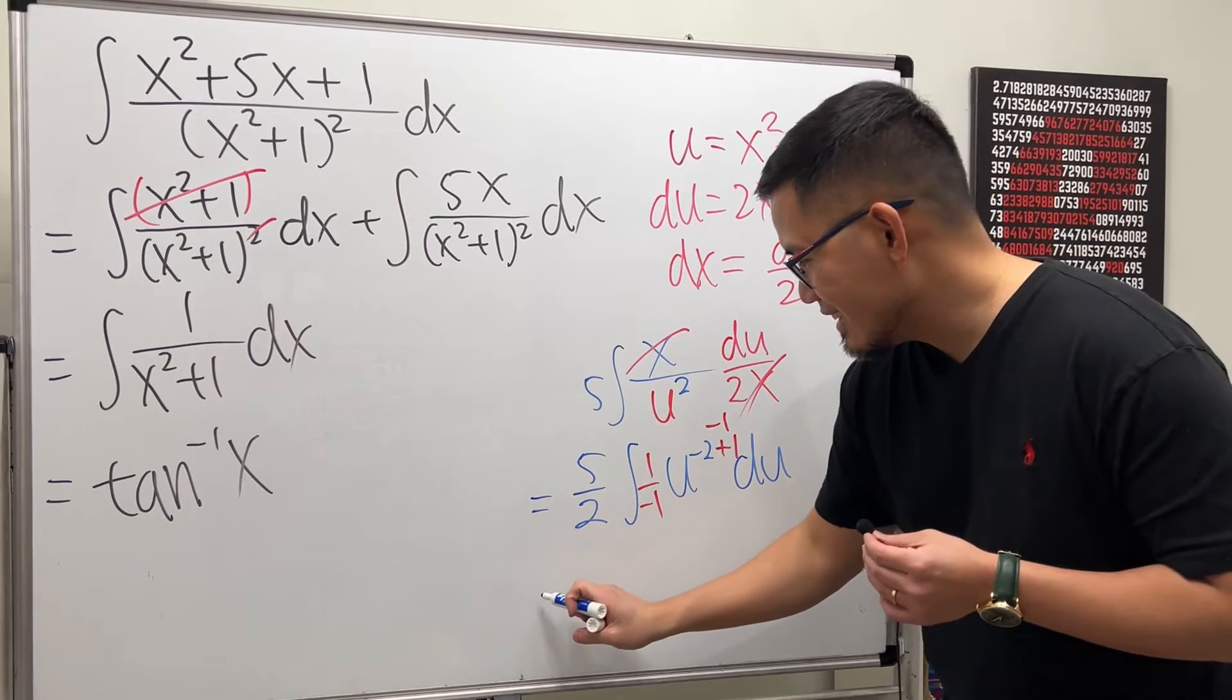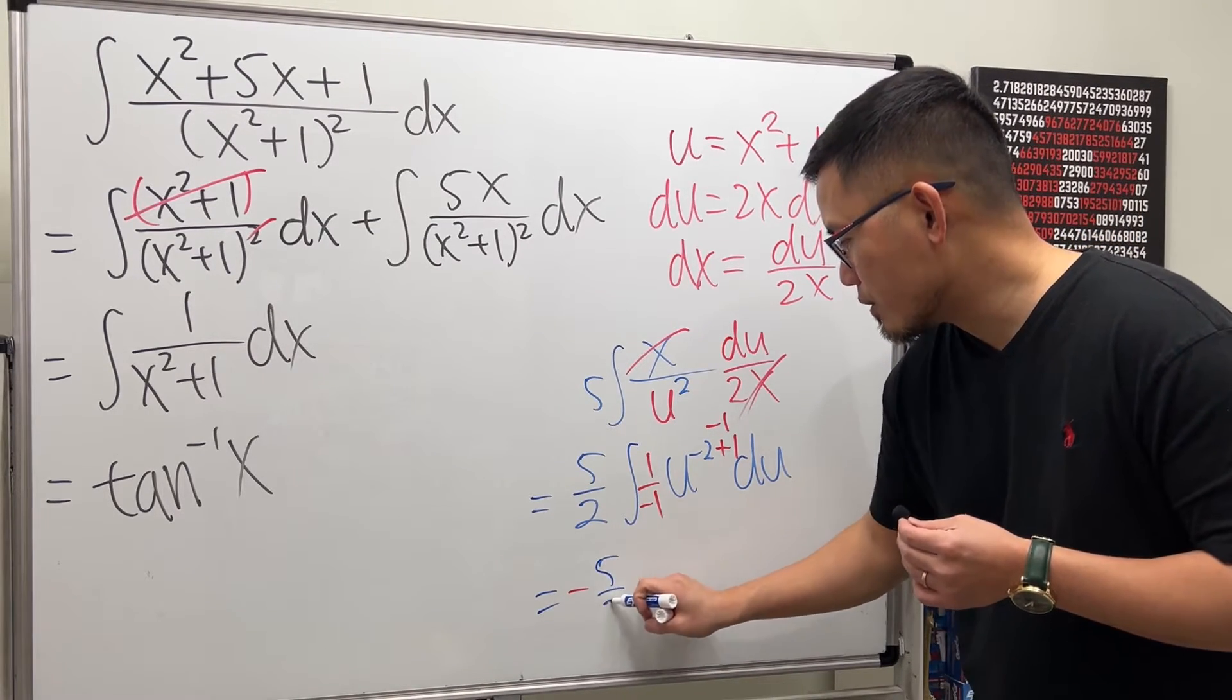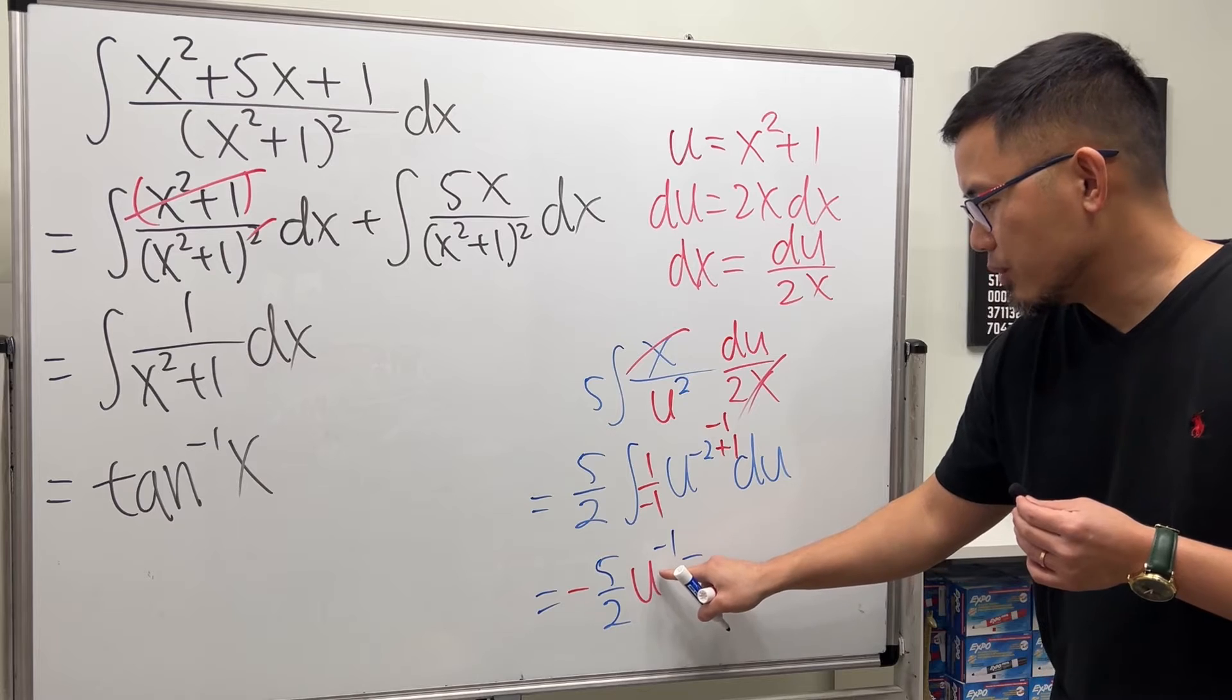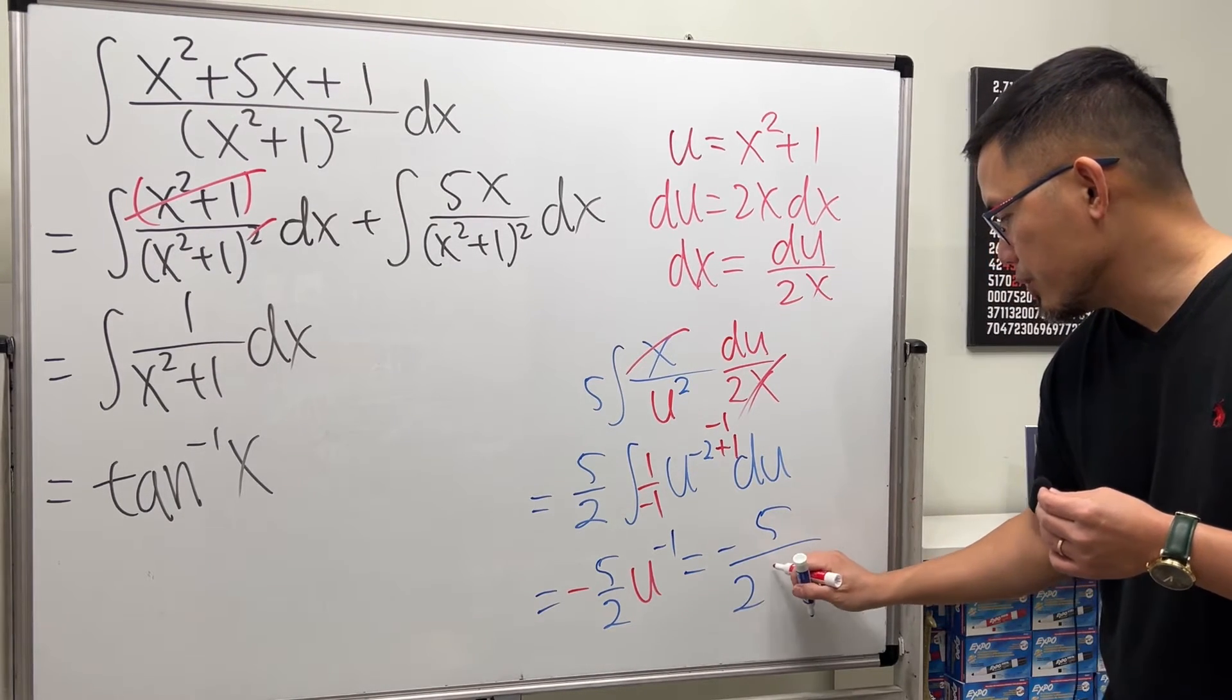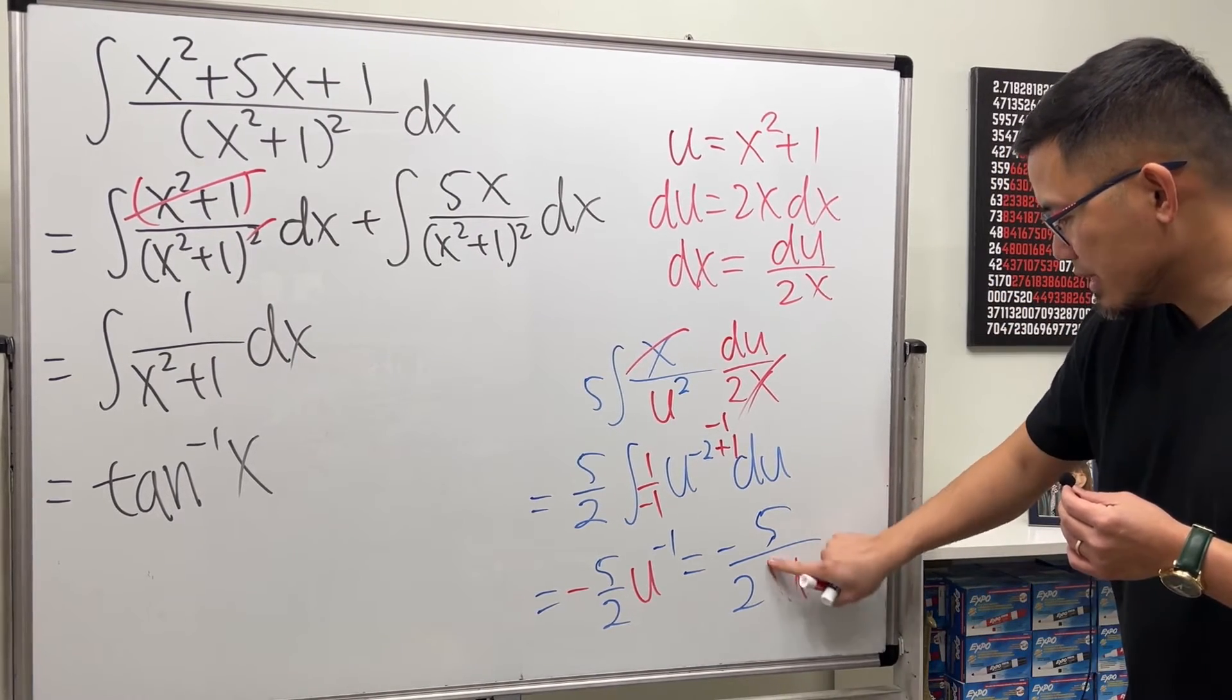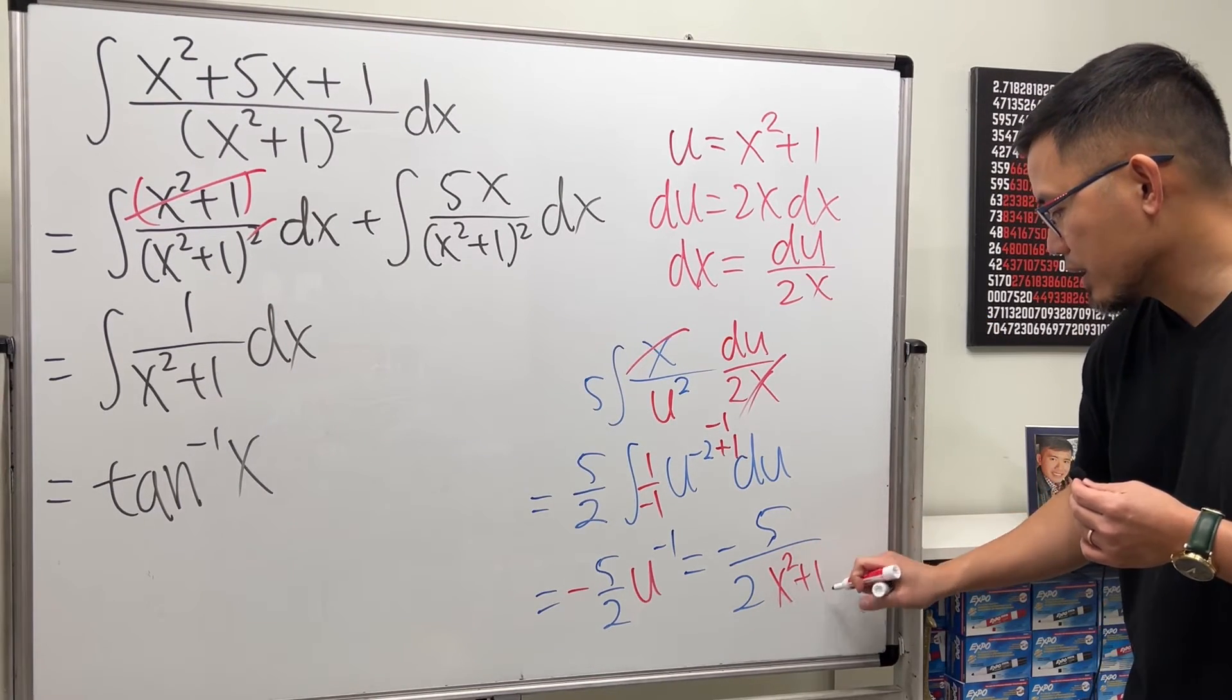But anyway though, we will have what? Negative. Yeah, so negative 5 over 2, and then what? u to the negative 1 power. And we can put the u down here, so it's negative 5 over 2u like so. And then u is that, so I'm just going to replace that with that because I am about to run off space. So x squared plus 1.